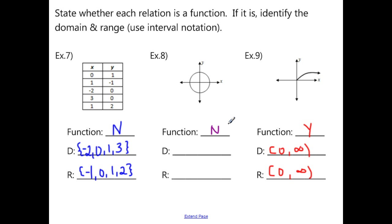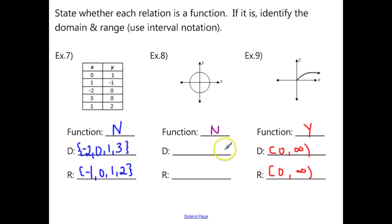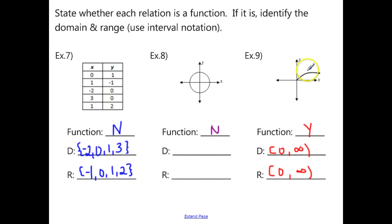For example eight, no — this is not a function. Because it's a circle, we don't have specific x or y values listed, so we can't state the domain and range without the coordinates on the edge of the circle. That one should be left blank. For example nine, this is a function. The domain goes from 0 to infinity, and because 0 is included we cap it with a bracket: [0, +∞). The range also goes from 0 to positive infinity: [0, +∞).